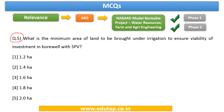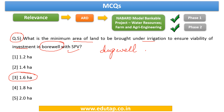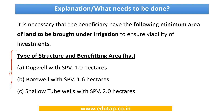Question 5: What is the minimum area of land to be brought under irrigation to ensure viability of investment in a bore well with SPV? In the previous question we dealt with dug well; now we are asking about bore well. The answer is 1.6 hectares. These are technical parameters that NABARD has mentioned in its report and we have to memorize them.